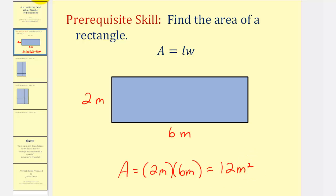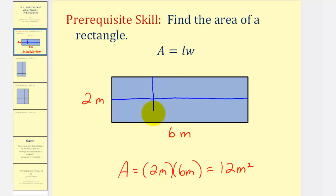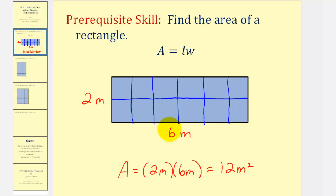We can actually model this if we divide the length into two equal pieces and divide the width into six equal pieces. We'll first divide it into thirds, then divide each third in half. Notice how we can see the 12 square meters inside the rectangle that's two meters by six meters.